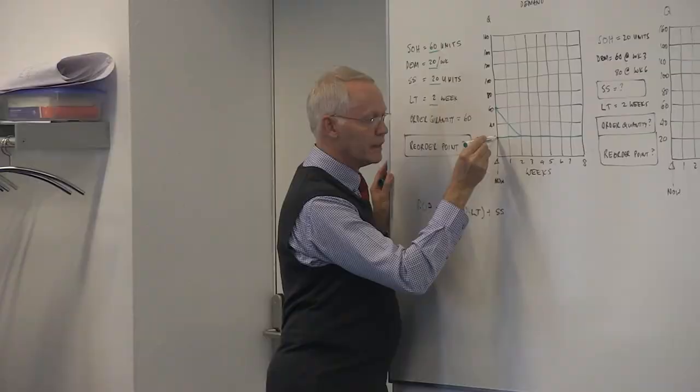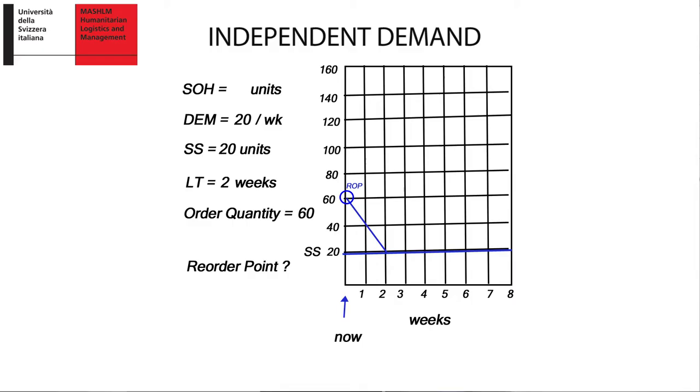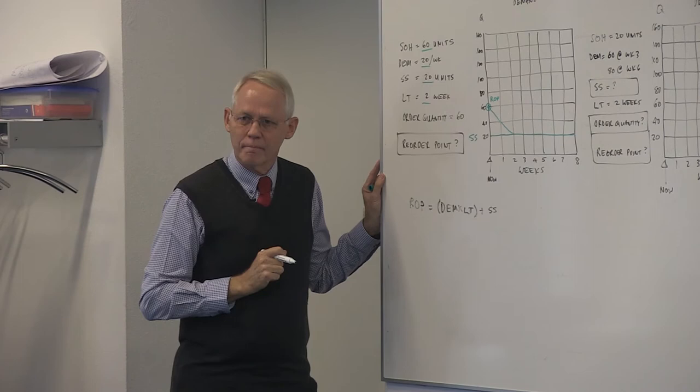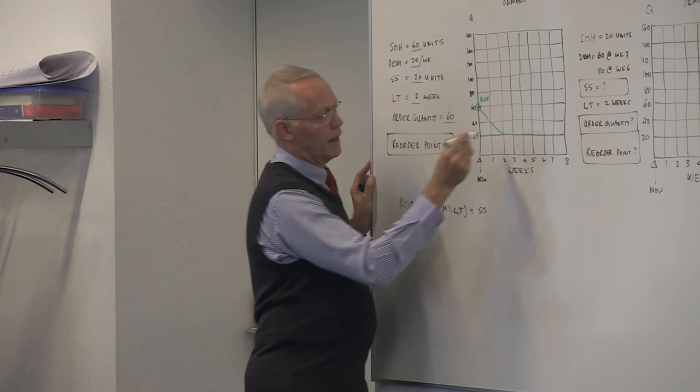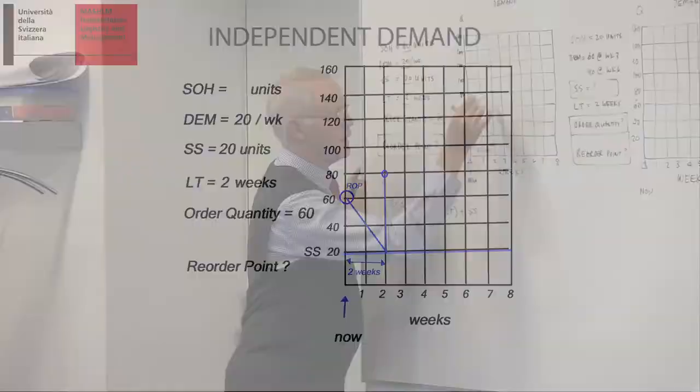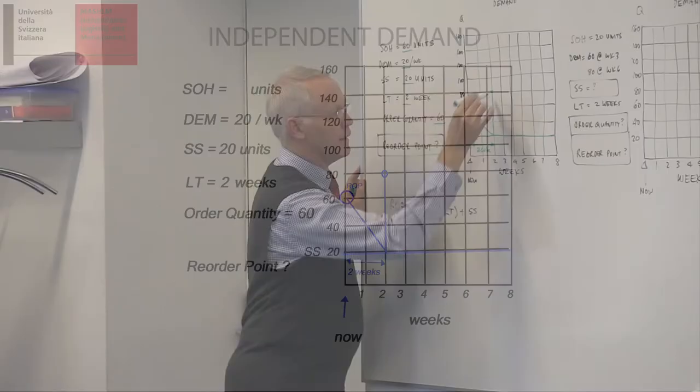Because I need replenishment at the time I hit safety stock. If my order quantity is 60, I receive it now at week two, so it's 20, 40, 60, takes me up to 80. That's my stock level. So, this is my lead time, two weeks, and that's my new level. I use on a diagonal line, I receive on a vertical line. It happens instantaneously if that's my weeks.